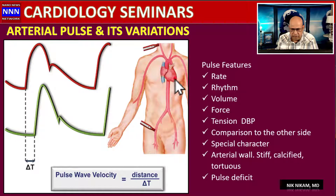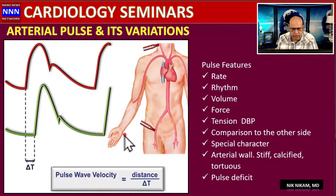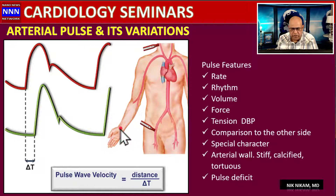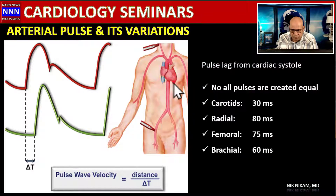Pulse deficit occurs in atrial fibrillation, where some weak ventricular contractions do not generate enough pressure to produce a palpable peripheral pulse. As a result, the heart rate counted at the apex exceeds the pulse rate felt at the wrist or groin.